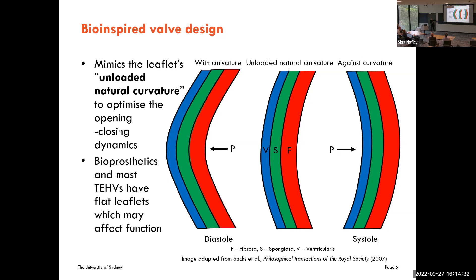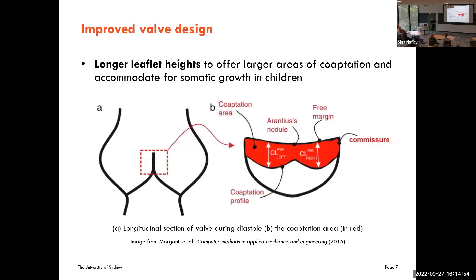Mimicking this curvature would help optimize the opening and closing dynamics of our synthetic heart valve. Bioprosthetics and most tissue engineered heart valves are developed with flat leaflets, which may negatively affect function. We want to incorporate the unloaded natural curvature. We are also looking at providing longer leaflets — to accommodate growth in children — so that as the valve expands there is still enough material for sufficient coaptation.